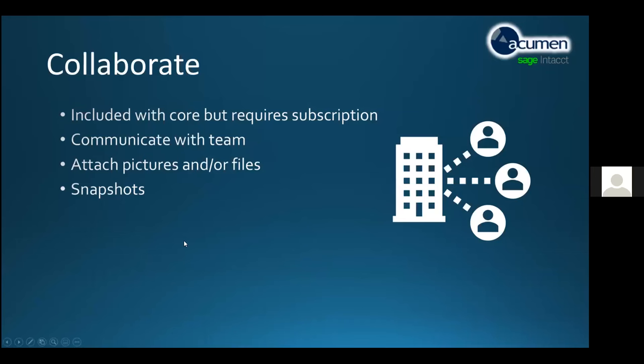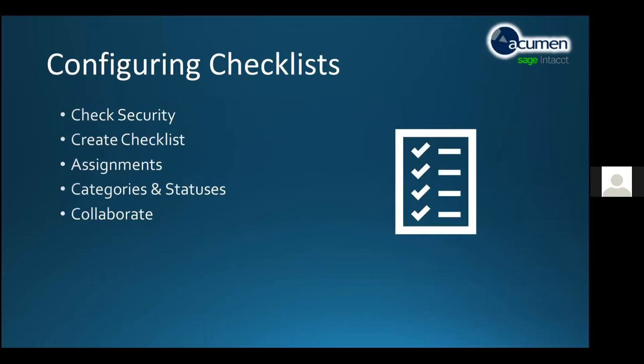The next tip is to use a function of Intacct called Checklists. Checklists were introduced earlier this year and are available as part of your core application — there's no need to buy anything to turn them on. However, you do have to set up security for checklists. If you don't see checklists as an option under the company section, you need to make sure you have security rights. We're going to create a checklist, talk about assignments and tasks underneath it, categories and statuses, and also how to use Collaborate on checklists.